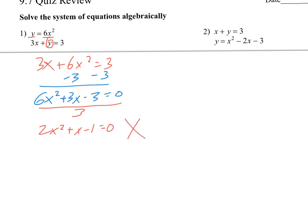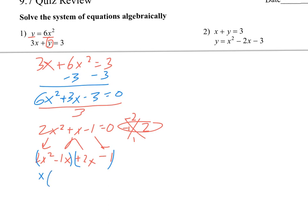Now I want to factor this, so we're thinking of two numbers that multiply to negative 2 and add to 1. That would be 2 and negative 1. I do need to use grouping here, since I have the 2x squared. So I'll split this up into negative 1x and plus 2x. Now I'll do my grouping — the first group I can only take out x, which leaves me with 2x minus 1. The second group I can only take out a 1, which also leaves me with 2x minus 1. So I get x plus 1 times 2x minus 1 equals 0.